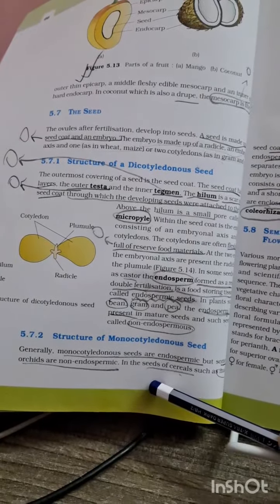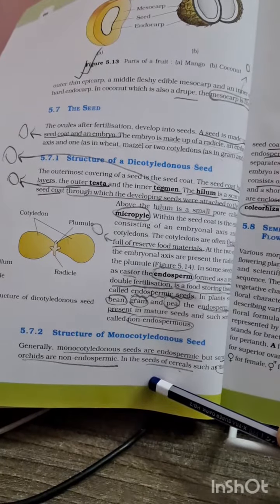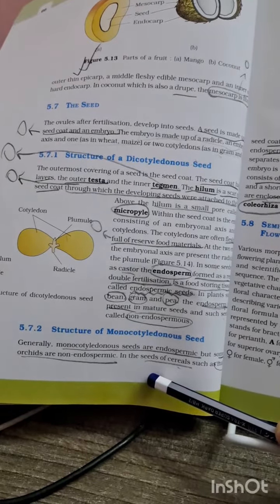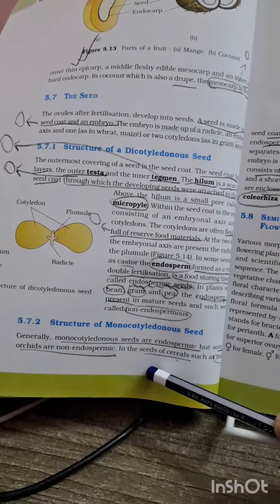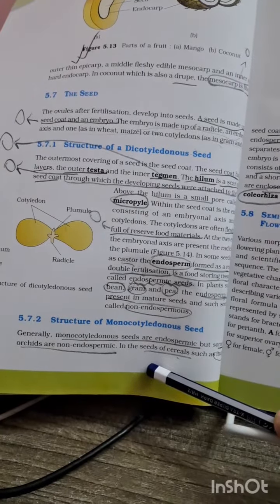Hello everyone, myself Wan Terry from Gerard Medical College. Today we are going to start with page number 66, structure of monocotyledonous seeds, chapter 5: Morphology of Flowering Plants.